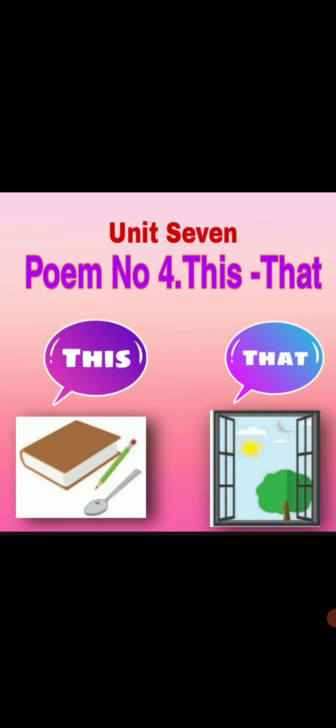You can see in the picture — things that are close, we use "this," and things that are far, we use "that." In the first picture, what can you see? You can see a notebook, a pencil, and a spoon — three things. The first is the notebook, second is the pencil, and third is the spoon. Yes or no? Yes.